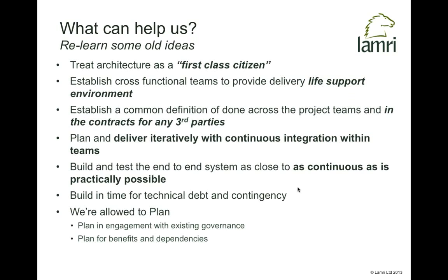One thing we can do is treat architecture as a first-class citizen rather than something that just evolves. We can use architecture — an idea of the system structure that will evolve — to help direct and organize development teams. We might need a delivery life-support environment for allocating features onto teams, with some method rather than letting teams pick features at random. A cross-functional program team can allocate features and also listen to improvements coming up from individual teams.